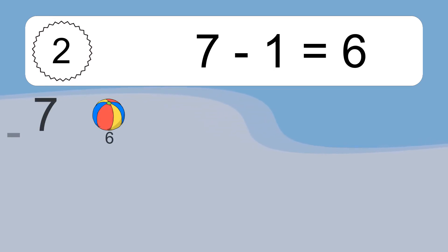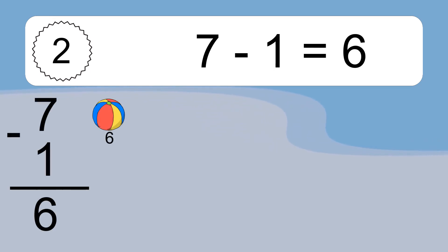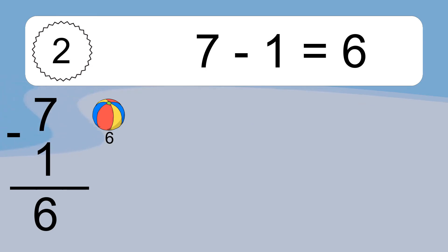7 minus 1 equals what? 7 minus 1 equals 6. Let's count it: 6.